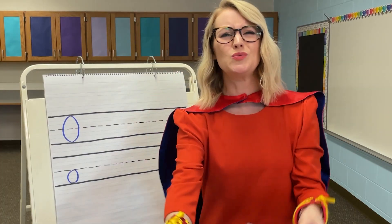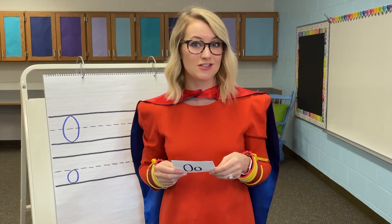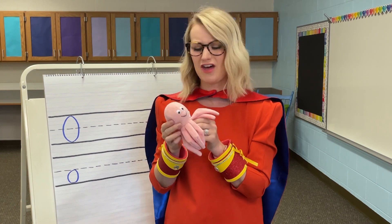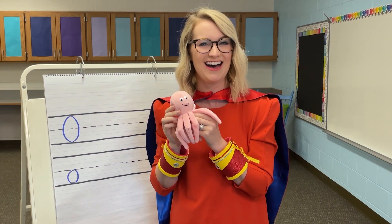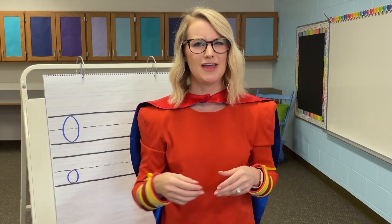The letter O is really special because it can make two sounds. It can make the short sound like in the word octopus. Listen to the beginning sound of that word — ah, octopus. The letter O's short sound is ah. To make the short sound for the letter O, you're going to open up your mouth, drop your tongue down, and lower your chin to make a big O shape. Ah, ah, ah. You try it.